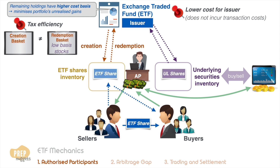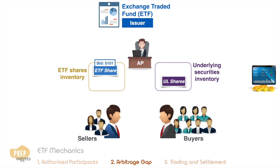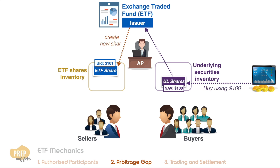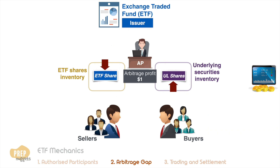And most importantly, the AP helps keep the market price close to the NAV of the ETF. If the market price deviates from the NAV, the AP will step in to earn arbitrage profit. For example, if demand is high and buyers bid at $101 for a share of ETF with a $100 NAV, the AP will buy the underlying securities for $100, use those securities to create a new ETF share, and sell it for $101, earning an arbitrage profit of $1. This puts downward pressure on the ETF share price and upward pressure on the price of underlying securities, continuing until the market price and NAV are equal and no further arbitrage opportunity exists.